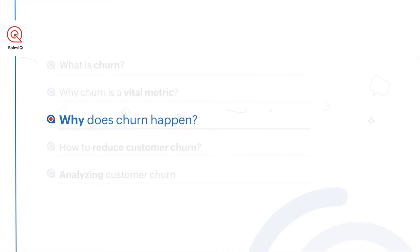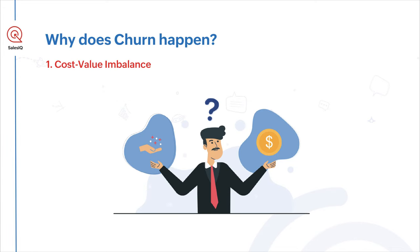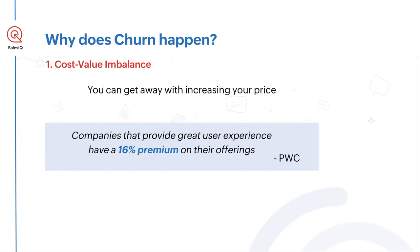Why does churn happen? There are many reasons. Among them, the majority think an increase in the cost of your product or service is the primary reason — let me tell you it is not. When the value your product or service gives your customers is less than the price they pay, churn happens. That is the primary reason. A PwC statistic says that companies that provide great user experience have a 16% premium on their offerings. You can get away with increasing your price, as long as it offers great value.